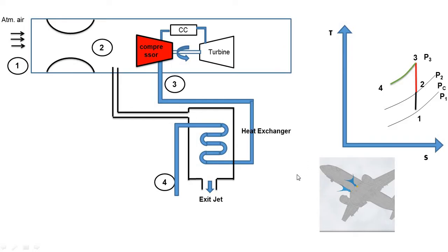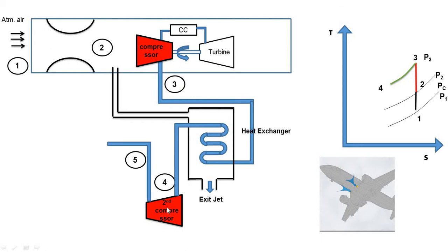After the first heat exchanger, the cooled air is supplied into the second compressor. In the second compressor, isentropic compression again takes place — process four to five. Pressure increases from P4 to P5, temperature increases from T4 to T5, and entropy S4 equals S5. On the T-S diagram, a vertical line is drawn from point 4 to point 5.